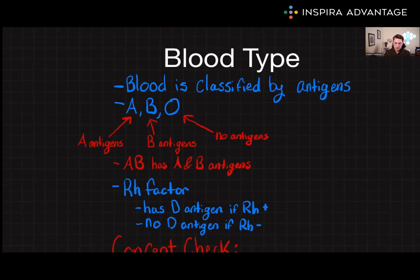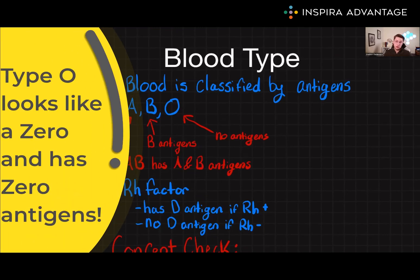Now let's move on to blood type, another important aspect of the circulatory system. Blood type refers to the classification of blood based on the presence or absence of certain antigens on the surface of red blood cells. These antigens can be proteins or sugars, and they are inherited from our parents. The most important blood groups are A, B, AB, and O. Type A blood has A antigens on the surface of the red blood cells, type B blood has B antigens, type AB blood has both type A and B antigens, and type O — which looks like a zero — has no antigens.